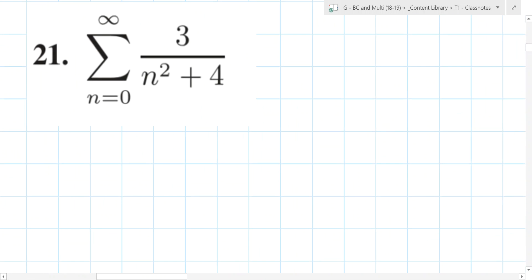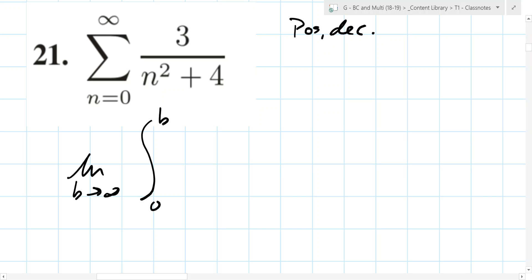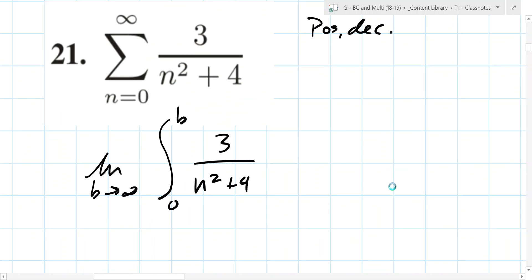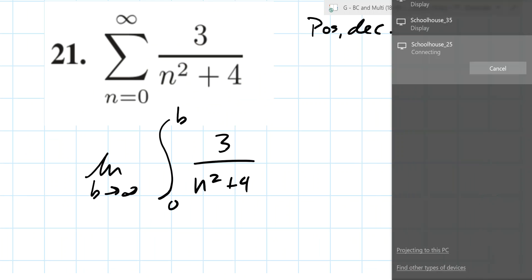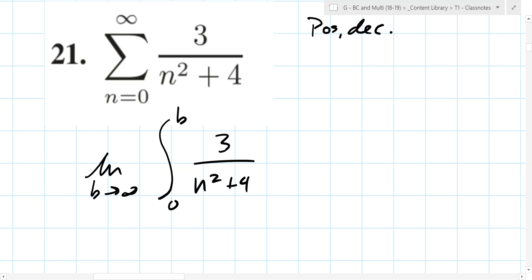How do you know that the integral test is a potential one you could use on this? It's positive and it's decreasing—that's super important. So what are you trying to do? You're trying to do this integral, right? The limit as B goes to infinity. Does it matter if it starts at zero or one? It's not going to matter, but it's a good thing to pay attention to. Generally speaking, whether or not something converges or diverges is not influenced too heavily by if it starts at zero or one.